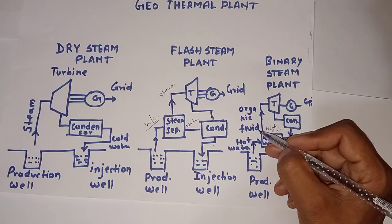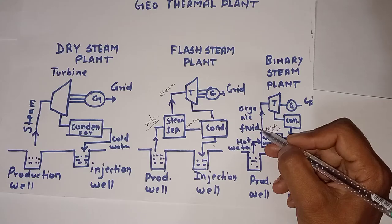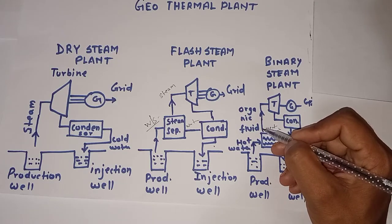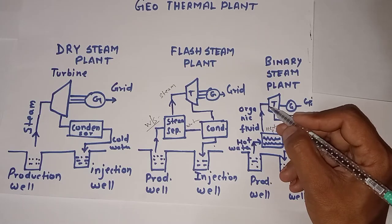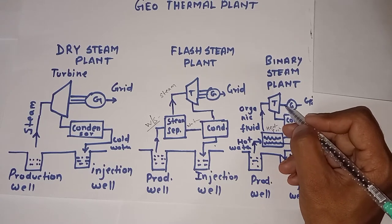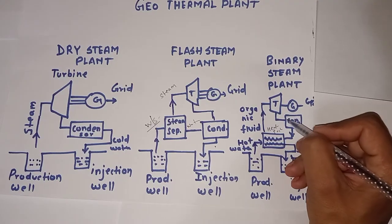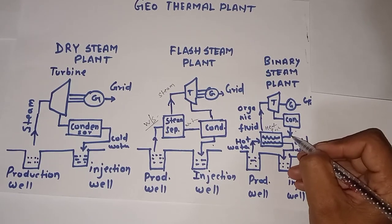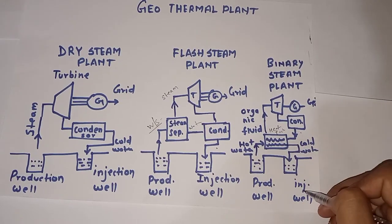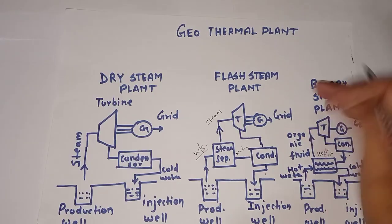In the heat exchanger, an organic fluid is used to reduce the boiling point, so the working fluid boils at a lower temperature than water. This organic fluid passes through the turbine, which rotates and drives the coupled generator shaft, converting mechanical energy to electrical energy sent to the grid. Remaining water droplets from the condenser — which uses cold water — go back to the heat exchanger and then into the injection well, completing the cycle.